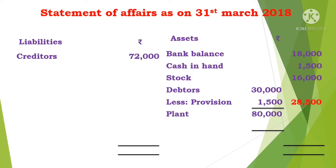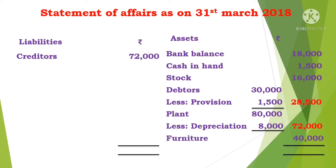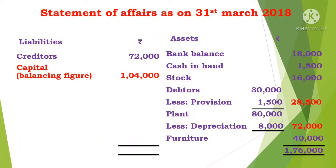Next item: furniture 40,000. The asset side total value is 1,76,000. On the liability side, creditors value is 72,000. So 1,76,000 minus 72,000 is 1,04,000. This is the closing capital — the balancing figure. The liability side total is 1,76,000.